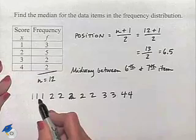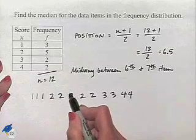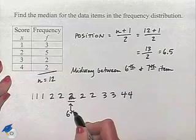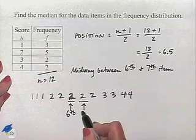Now, let's count: 1, 2, 3, 4, 5, 6. Our sixth value is a 2. And our seventh value is also a 2.